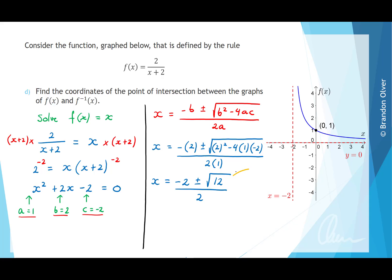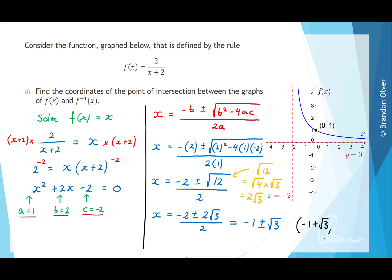The square root of 12 can be written as the square root of 4 times the square root of 3, which equals 2 root 3. So x equals minus 2 plus or minus 2 root 3, divided by 2, which simplifies to minus 1 plus or minus the square root of 3. However, inspecting the domain, minus 1 minus the square root of 3 is outside the domain. So the only valid solution is minus 1 plus the square root of 3. Since this lies on y equals x, the y value is also minus 1 plus the square root of 3.